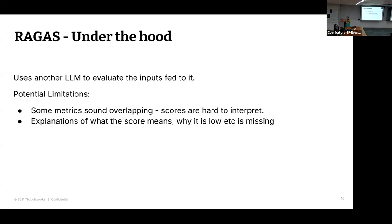GPT-4 is rumored to be 160 billion parameters — you choose your teacher to be that kind of large model, then test whatever model you've built, even a custom-trained one. You validate your answers against what the teacher believes to be correct. The teacher can still be wrong, but at least you get a score — out of 10 questions, you answered eight or seven correctly.